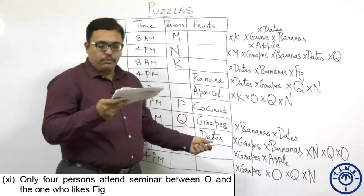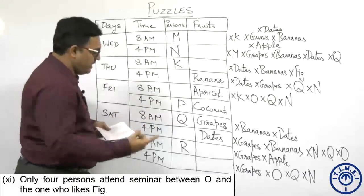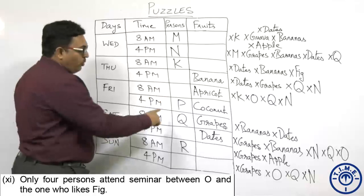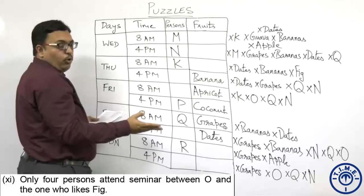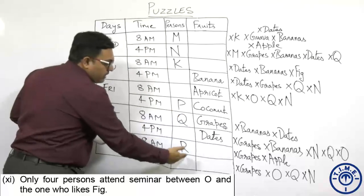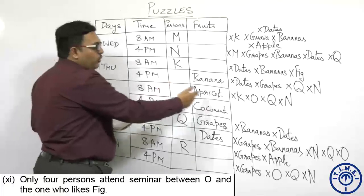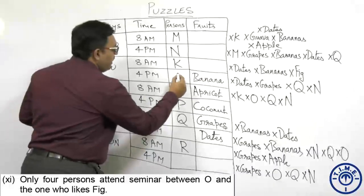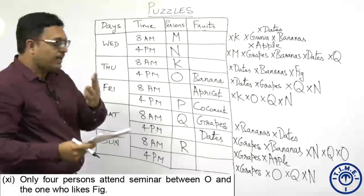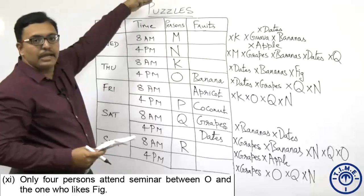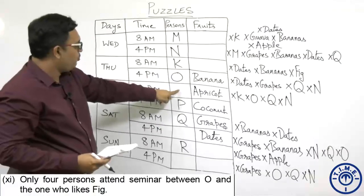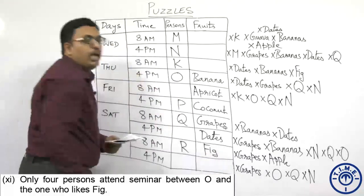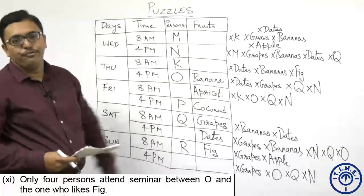Only four persons attend the seminar between O and the one who likes fig. O cannot come after Q, cannot be at the apricot cell, and cannot be after Saturday. So O must be at Thursday 4PM. Counting four persons after O: one, two, three, four — fig goes to R at Sunday 8AM.